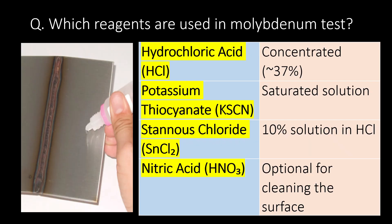Which reagents are used in the molybdenum test? Hydrochloric acid, potassium thiocyanate, stannous chloride, and nitric acid are the chemicals or reagents used in the molybdenum test.